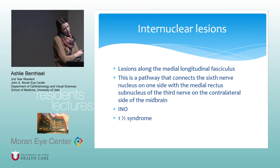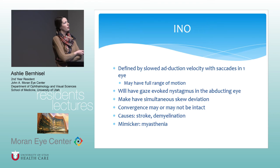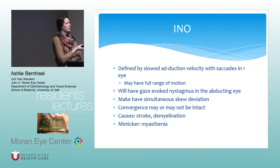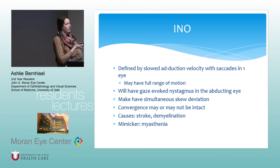Internuclear lesions are lesions along the medial longitudinal fasciculus (MLF), a pathway that connects the sixth nerve nucleus on one side with the medial rectus subnucleus of the contralateral CN3. INO is really defined by slowed adduction velocity with saccades — patients may have full range of motion. They will have gaze-evoked nystagmus in the abducting eye and may have a simultaneous skew deviation. Convergence may or may not be intact. Most common causes are stroke and demyelination. Always consider myasthenia, which can mimic INO but typically lacks nystagmus in the abducting eye.